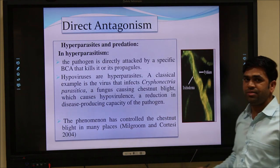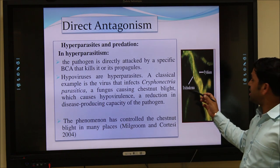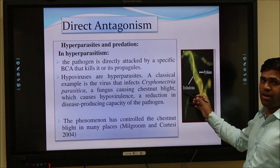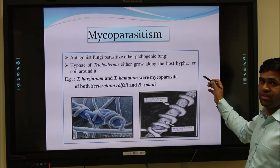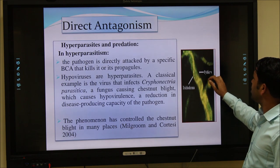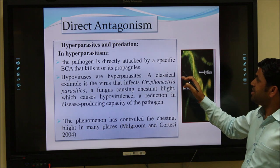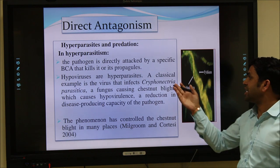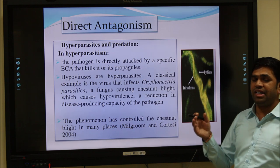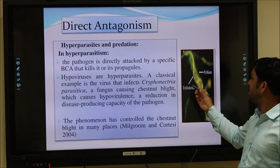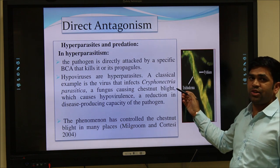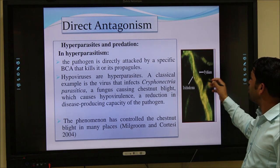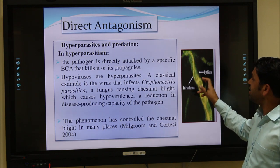Under direct antagonism, this photograph shows an association between Trichoderma and Pythium. Trichoderma is the biocontrol agent and Pythium is a plant pathogen which causes wilt disease in plants. Hyperparasitism means when a parasite is parasitized by another organism. In this case, mycoparasitism means one fungal parasite is parasitized by another fungus. Trichoderma acts as the biocontrol agent and there is strong control of Pythium fungus by Trichoderma.